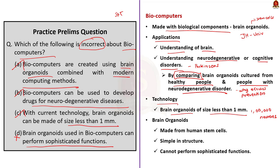With current technology, researchers are only able to grow brain organoids of size less than 1 millimeter with around 1 lakh neurons. Scientists are working on increasing this size to improve computing capacity. The fourth option says brain organoids used in biocomputers can perform sophisticated functions — this is incorrect. Brain organoids are made from human stem cells, are very simple in structure, and cannot perform sophisticated functions as the normal human brain does. They also do not have blood circulation in the initial stage, which limits their growth. The correct answer is option D.